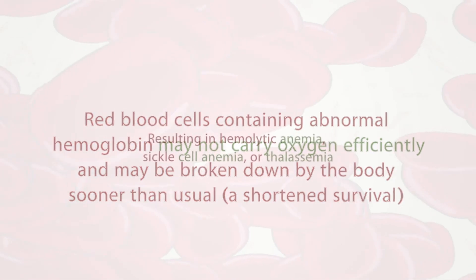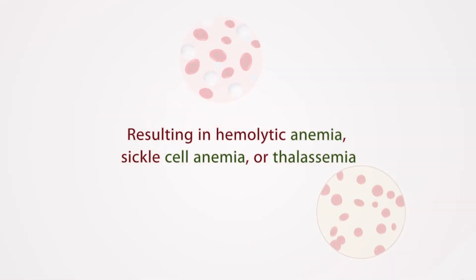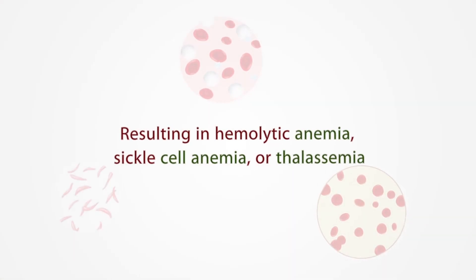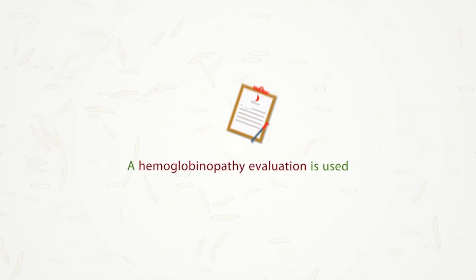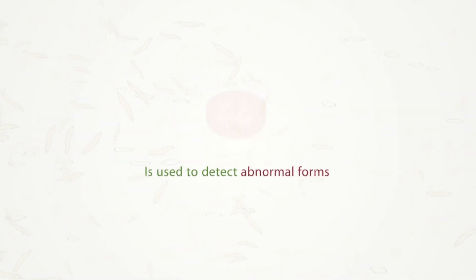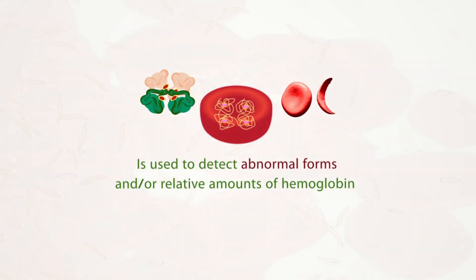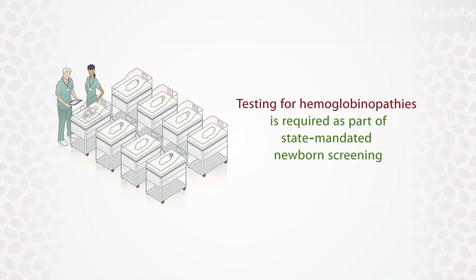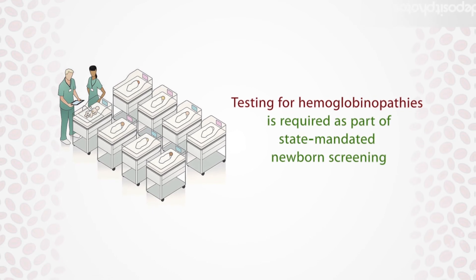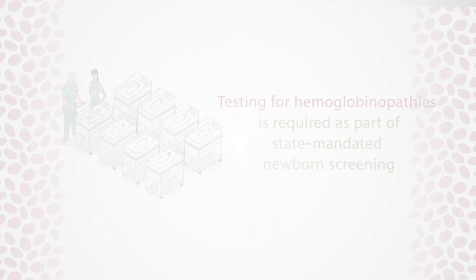This can result in hemolytic anemia, sickle cell anemia, or thalassemia. A hemoglobinopathy evaluation is used to detect abnormal forms and/or relative amounts of hemoglobin. Testing for hemoglobinopathies is required as part of state-mandated newborn screening.